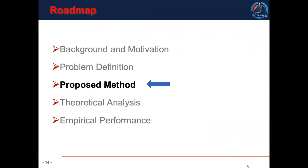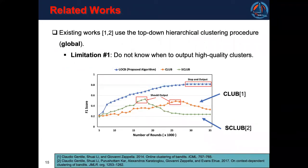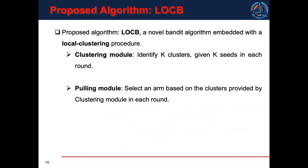Next, I will elaborate our proposed method. First, let's briefly review the related works. The most related works use a top-down hierarchical clustering procedure. However, they have two limitations. First, they do not know when to output the clusters. This figure shows the change of their clustering accuracy. As we can see, we need to choose the proper time to output the clusters. Second, the computational cost is high because in each round, they need to compare the serving user with each user.